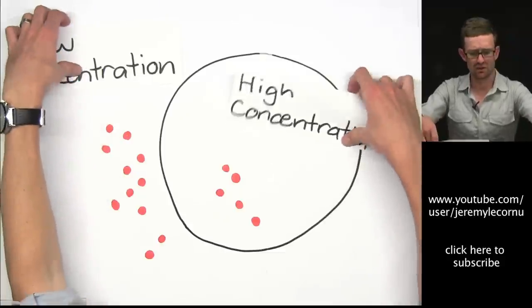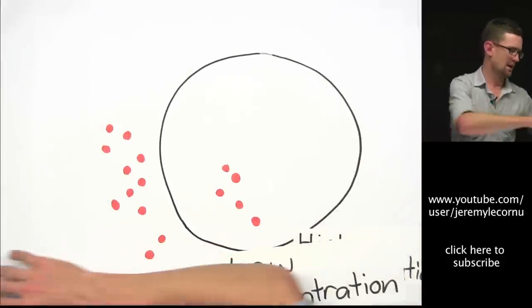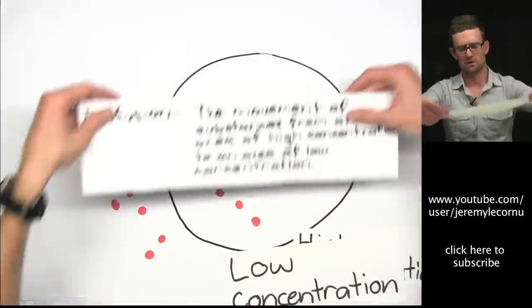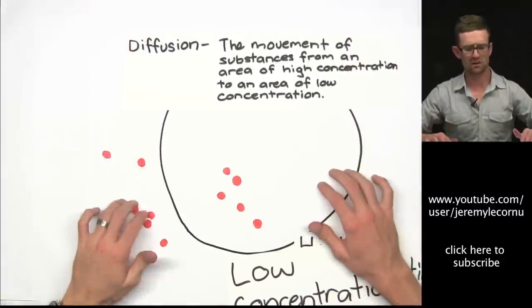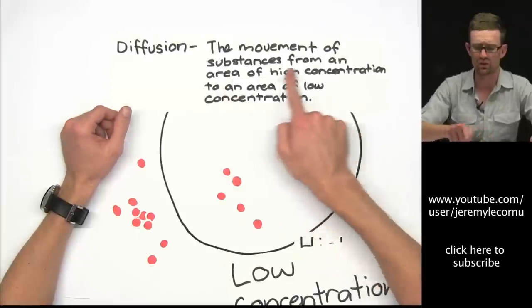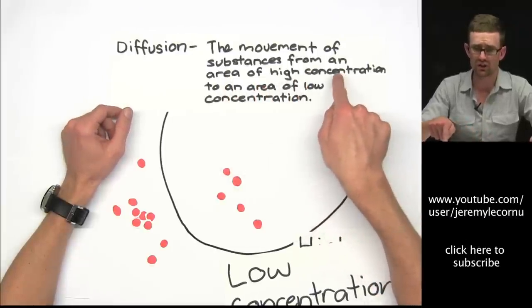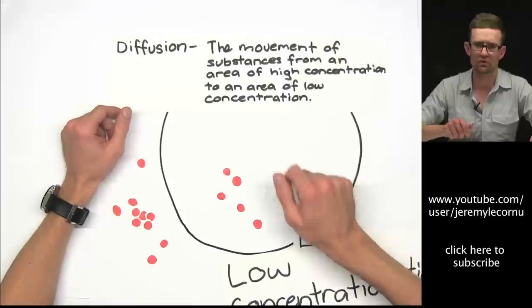So that pretty much sums up our topic. I'll just give you this definition here. Diffusion is the movement of substances from an area of higher concentration to an area of low concentration.